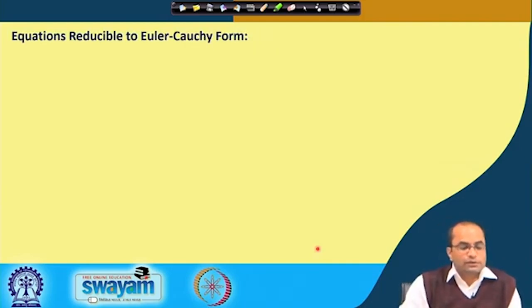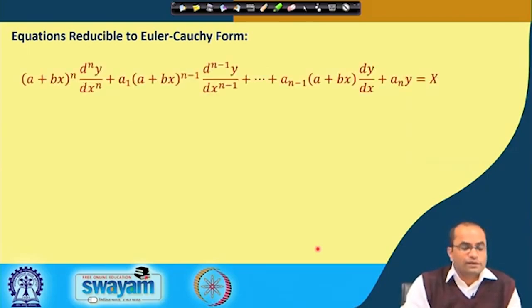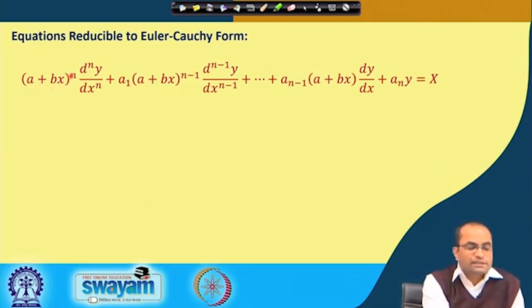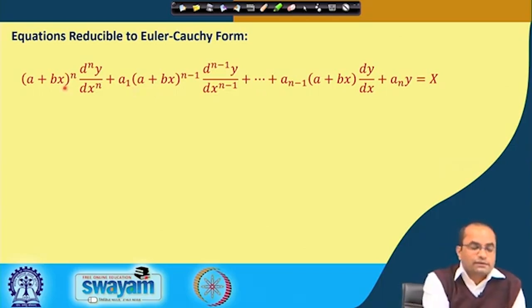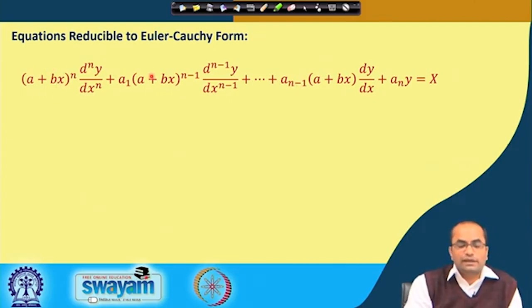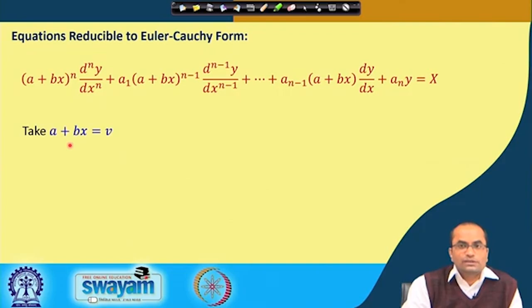Now we discuss equations which can be reduced to Cauchy-Euler form. For instance, equations having coefficients of the form (a + bx)^n, (a + bx)^(n-1), and so on. In the standard Cauchy-Euler equations we have just x^n or x^(n-1); here we have (a + bx) in that role. We need to substitute a + bx = v as a new variable, and with this substitution our equation is converted to the Cauchy-Euler equation.